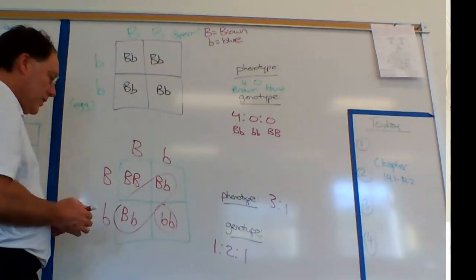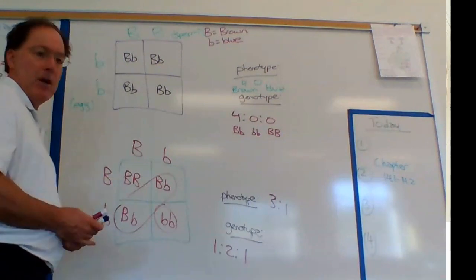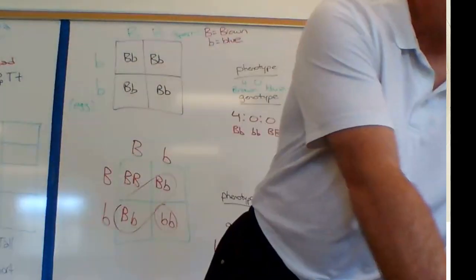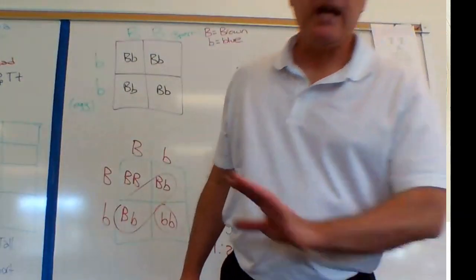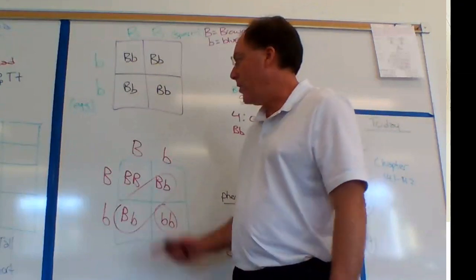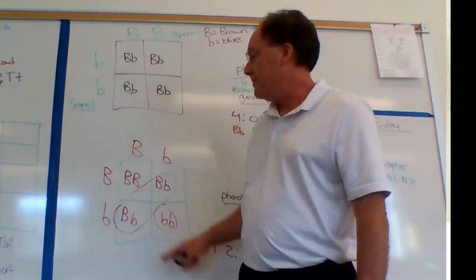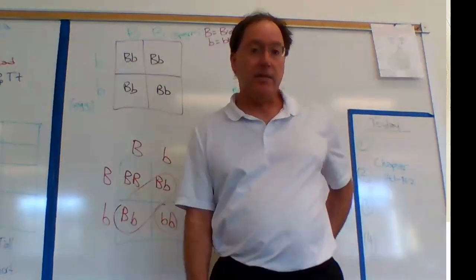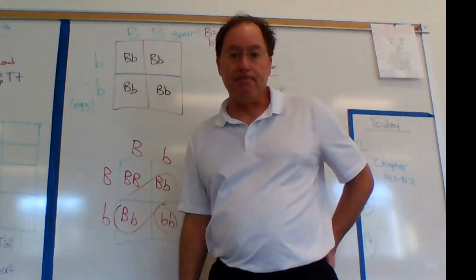As for phenotypes: brown eyes, brown eyes, brown eyes, blue eyes — so we have a 3:1 phenotypic ratio. Three brown-eyed to one blue-eyed. Go ahead and press pause if you need to. This is at the most basic level and you should know all this.